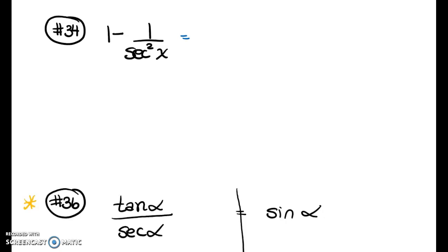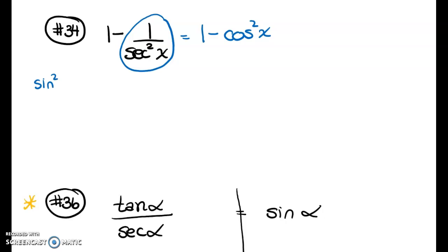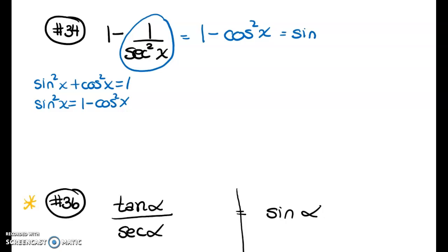For this one, the reciprocal of secant is cosine, so I'll flip it using my reciprocal identity. That gives me an expression that looks like an alternative form of sin²x + cos²x = 1. Subtracting cos²x from both sides, 1 − cos²x equals sine squared x, which satisfies my instructions.